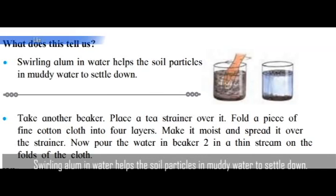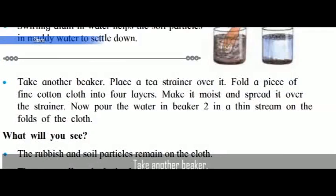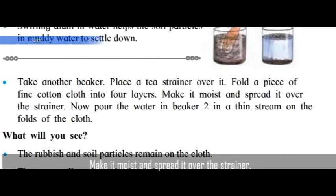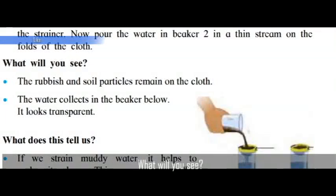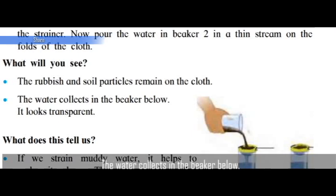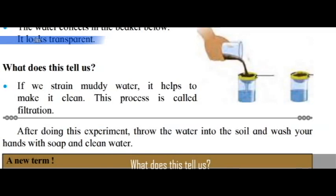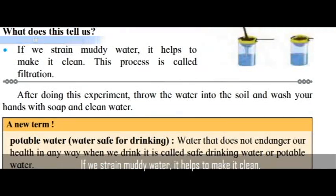Take the other beaker, place a tea strainer over it, fold a piece of fine cotton cloth into four layers, make it moist, and spread it over the strainer. Now pour the water from beaker two in a thin stream onto the folds of the cloth. What will you see? The rubbish and soil particles remain on the cloth while the water collects in the beaker below — it looks transparent.